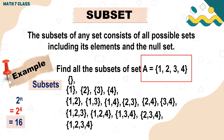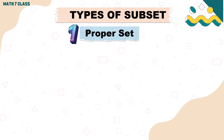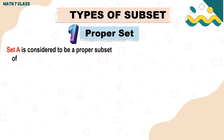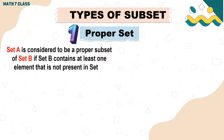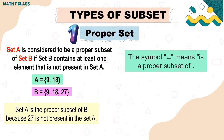There are 16 subsets of Set A including the null set. Now let's discuss the types of subsets. The first one is the proper subset. Set A is considered to be a proper subset of Set B if Set B contains at least one element that is not present in Set A. For example, Set A is {9, 18} and Set B is {9, 18, 27}. Set A is the proper subset of B because 27 is not present in Set A. This is the symbol for a proper subset.